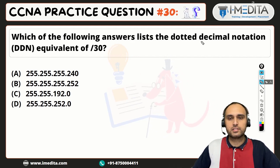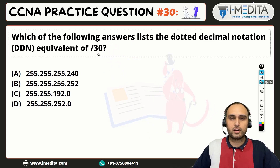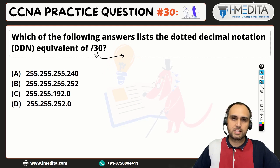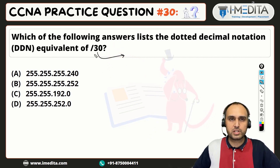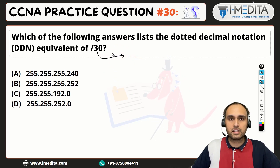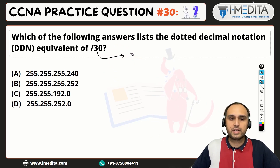Which of the following answer lists the dotted decimal notation equivalent of slash 30? So for slash 30, we have to work this out — as you may have seen in the last question video. Slash 30 is just a number of 1s in our subnet mask.